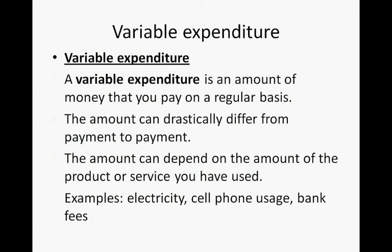Examples of variable expenditure are electricity, cell phone usage — that's the part apart from the contract — or bank fees. The more often that you make use of your bank account, for instance cash withdrawals or cash payments, the higher the variable expenditure is.